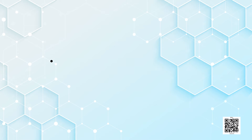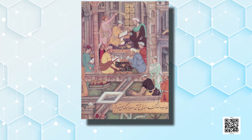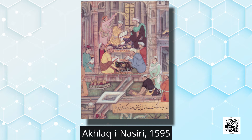So what is this history? When did print literature begin to circulate? How has it helped create the modern world? In the very first picture given in your books, we can see book-making before the age of print — from Akhlak-i-Nasiri in 1595, a royal workshop in the 16th century, much before printing began in India. You can see the text being dictated, written, and illustrated. The art of writing and illustrating by hand was important in the age before print. Let's take up the journey of print culture.